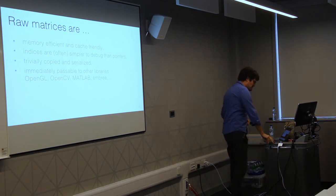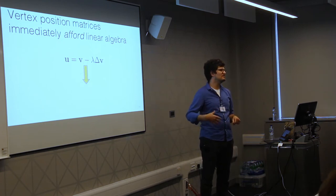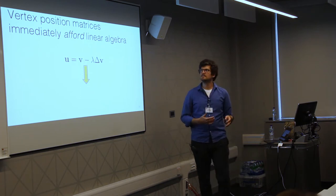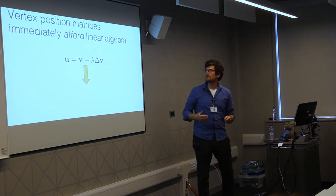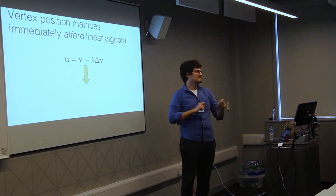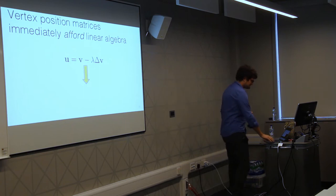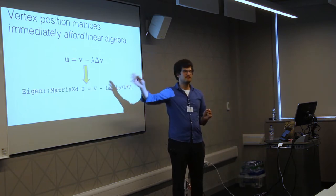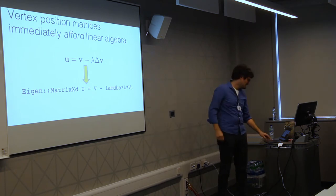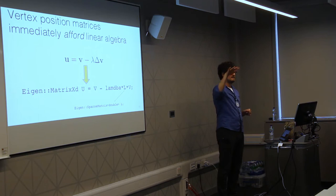Most importantly, this raw matrix format immediately affords linear algebra. Most of the math in geometry processing boils down to linear algebra operations on sets. Having vertex positions as a matrix immediately allows us to do Laplacian smoothing: take our vertices V, subtract off the Laplacian of V weighted by some amount, and that gives new positions U. This gets immediately translated into code.